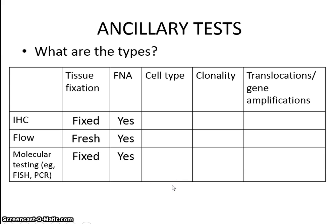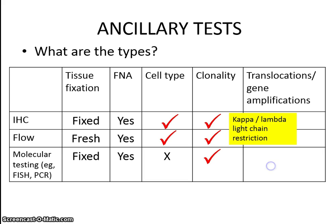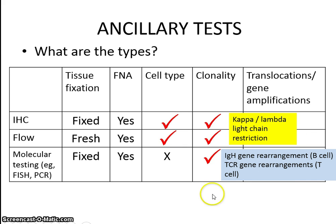Which of these tests can assess cell type? Generally immunohistochemistry and flow cytometry, not so much molecular tests. For clonality, all three test types are used. For immunohistochemistry and flow, we use these to assess kappa and lambda light chain restriction, meaning they can be used to assess B cell clonality. Molecular tests can be used to assess B cell clonality by looking at immunoglobulin heavy chain gene rearrangements, or T cell clonality by looking at T cell receptor gene rearrangements.